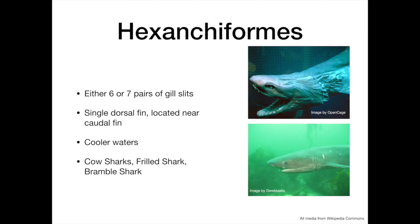The hexanchiforms can easily be distinguished by the presence of six or seven pairs of gill slits, as opposed to the five possessed by other sharks. Furthermore, they have a single dorsal fin, which tends to be small relative to the body size and is located close to the caudal fin. Found at all latitudes, in warmer waters they are found at depth, but in colder waters they may be found throughout the water column. Some examples include the cow sharks, the bramble shark, and the incredible frilled shark.